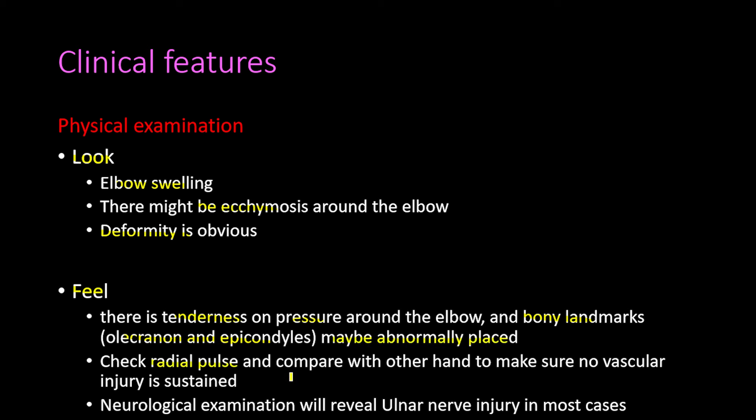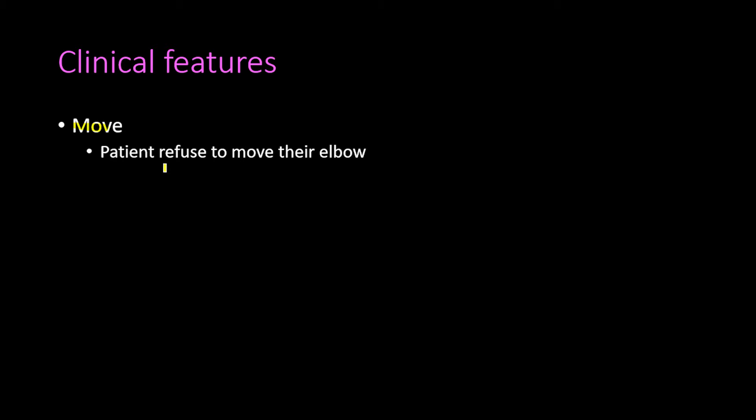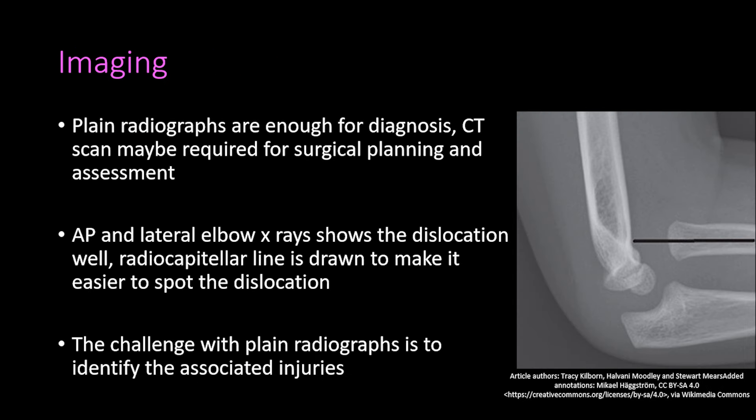On feeling you also check the radial pulse and compare it with the other hand to assess for vascular injury. Neurological examination will reveal ulnar nerve injury in most cases. On moving, the patient will refuse to move the elbow due to severe pain.